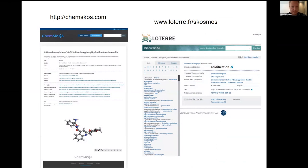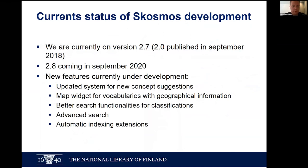Moving to the current status of SKOSMOS development: we are currently on version 2.7. Version 2.0 came out in September 2018. We have 2.8 coming this month with some accessibility improvements - stay tuned for that release. Some bigger features under development right now include an updated system for new concept suggestions, so if people using a vocabulary want to suggest changes or new concepts, we will have a new widget for that and a separate system for discussion of new concepts. We also have a map widget coming for vocabularies that have geographical information like coordinates.